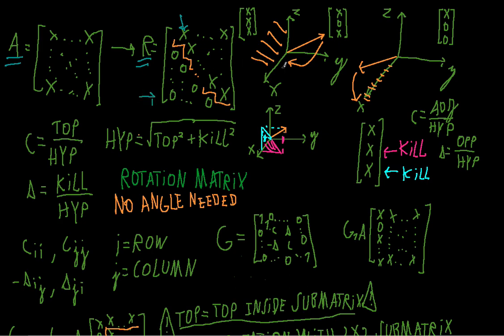To use the Givens rotation, we will each time apply several rotations to each column vector of the matrix. For the first column vector of A, we will apply n minus one rotations — n being the dimension of the n-by-n matrix — because the first element of the vector will stay non-zero. For the second column vector, we apply n minus two rotations, because the first and second elements will stay non-zero.